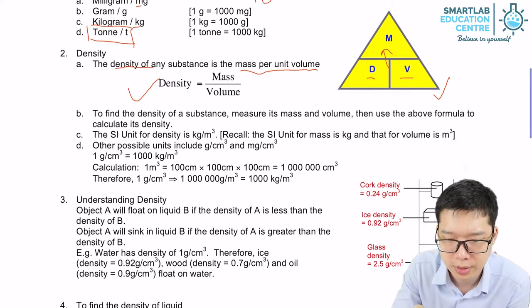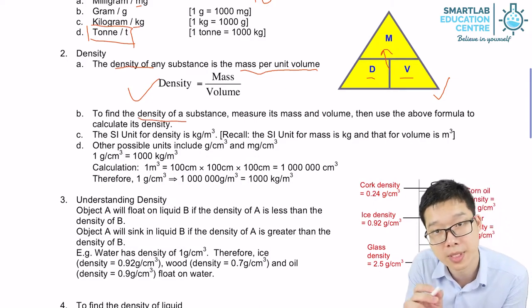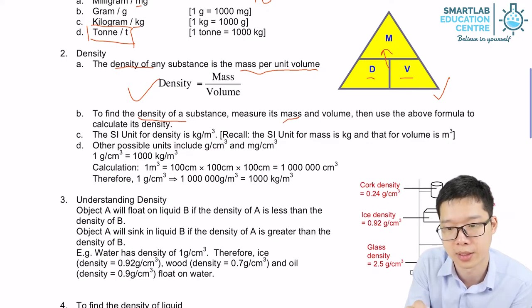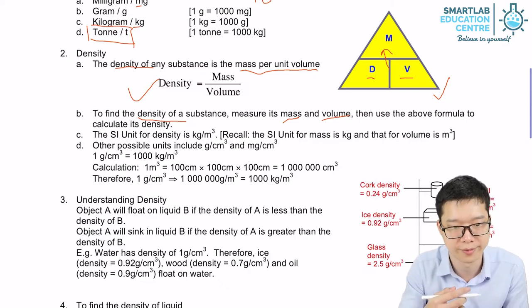Okay, so since we have the formula, if you want to find the density of a substance or matter, we want to know its mass and we have to know its volume. Then we can perform a division to find its density.